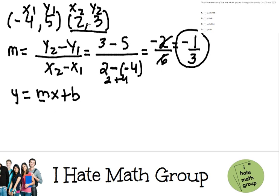So I'm gonna go ahead and plug what I have. I'm gonna pick this point and I'm gonna do 3 equals, and then m is negative 1/3, x equals 2 because look, I have a 2 here, plus b. That's basically what I'm looking for.